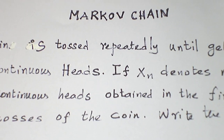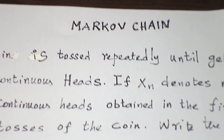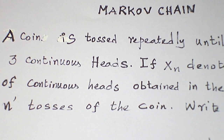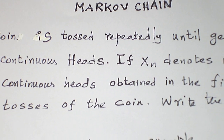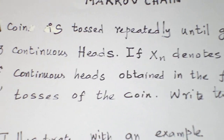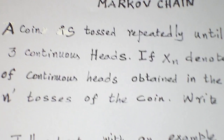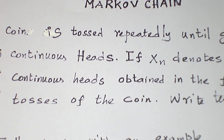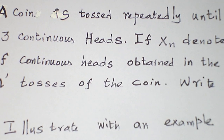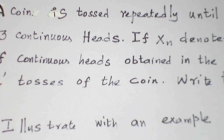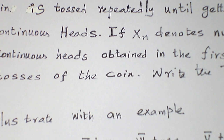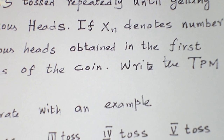Hello students. Today let us see a problem from the topic Markov chain. Let me read the question first. A coin is tossed repeatedly until getting three continuous heads, and XN denotes the number of continuous heads obtained in the first N tosses of the coin. Write the TPM. This is the question.